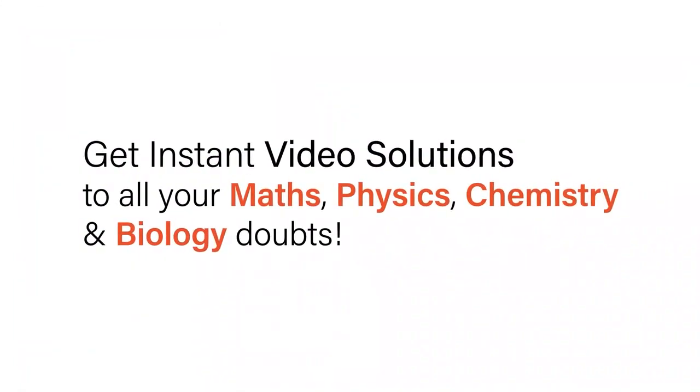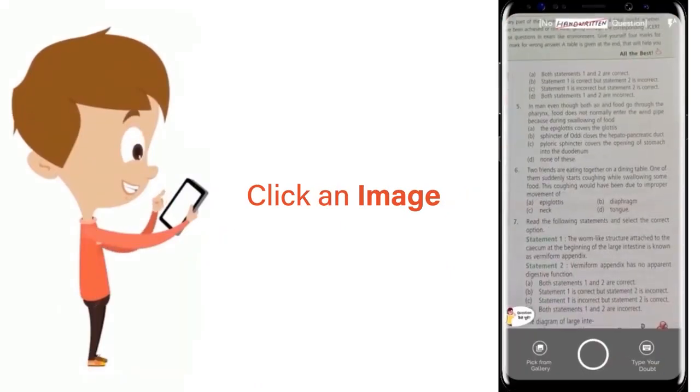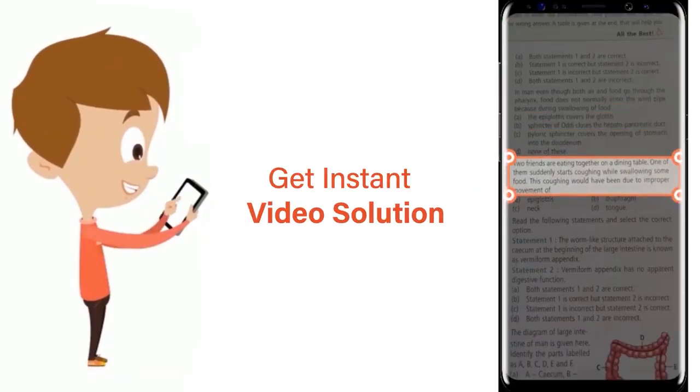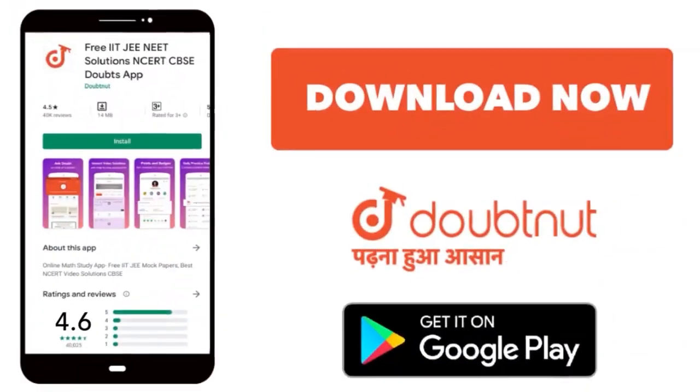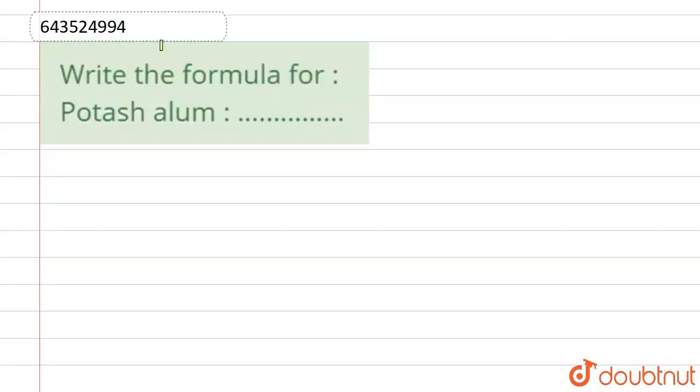With Doubtnet, get instant video solutions to all your math, physics, chemistry, and biology doubts. Just click the image of the question, crop the question, and get instant video solution. Download Doubtnet app today. Hello everyone, so the question is saying write the formula for potash alum.